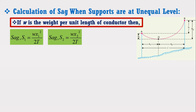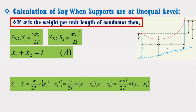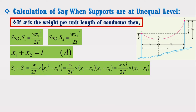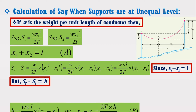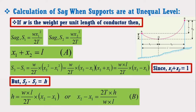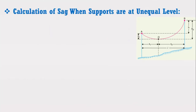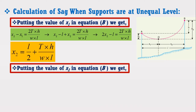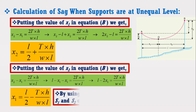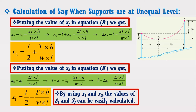From the figure, it can be noticed that X1 plus X2 equals L. Subtracting both sags, we get: X2 squared minus X1 squared equals X2 minus X1 into X2 plus X1. Since X2 plus X1 equals L, and X2 minus X1 equals H, the equation simplifies accordingly. Putting the value of X1 in the equation and solving, we get the expression for X2. Similarly, putting the value of X2 and solving, we get the expression for X1. Therefore, using these expressions, X1 and X2 can be easily calculated.